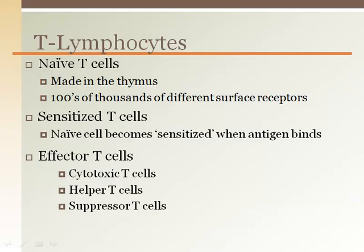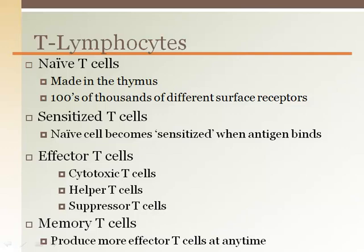Just like B lymphocytes, T lymphocytes also make memory cells so that the antigen-fighting mechanisms for a particular antigen are retained and able to be recalled if that antigen is ever encountered again.